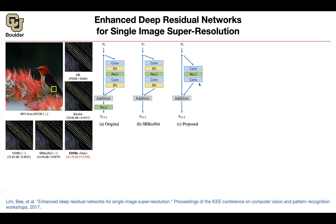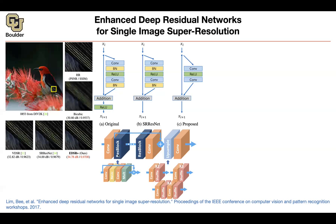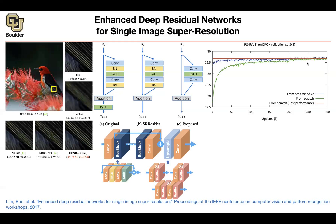Maybe your network will have a harder time converging without batch norm, but if you are already doing ResNets, batch norm may not be necessary. The actual architecture has ResNet blocks — convolution, ReLU, convolution, multiplication, and addition — with a long shortcut from input to output because you only want to learn the difference. Then you have upsampling layers using convolution and the sub-pixel shuffle operation, allowing you to upsample two, three, or four times bigger, followed by a 1x1 convolution to predict the super resolution image.